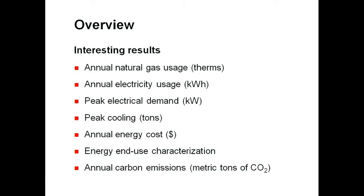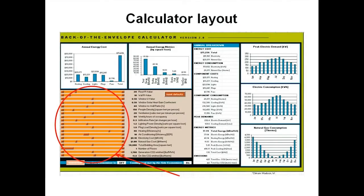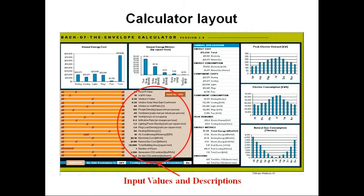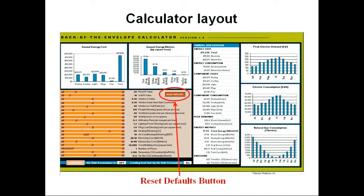Also, the calculator gives annual carbon emissions in metric tons of CO2. Here we see the overall calculator layout. There are the input sliders, which allow you to tailor the calculator to fit your specific building design, the input values and descriptions, which are controlled by the sliders and show the actual numerical values of the parameters of your building, an economizer on/off button, which turns on the economizer if your building uses that control, a reset defaults button, which sets all the input parameters back to their original values, and an annual energy cost result, which will change as you update your building parameters.